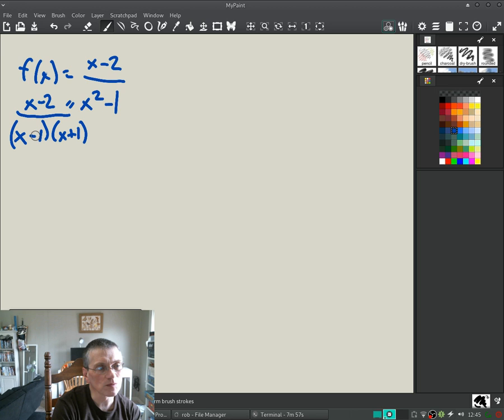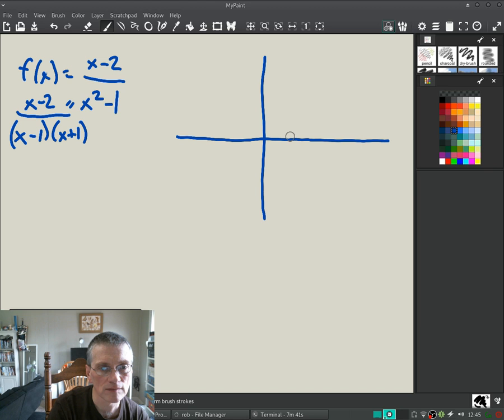None of these cancel. If they cancel, you'd have a removable discontinuity. You'd have a hole. But they don't cancel. So you have two asymptotes, vertical asymptotes: x equals 1 and x equals minus 1. I'll put 1 here, 1 here.